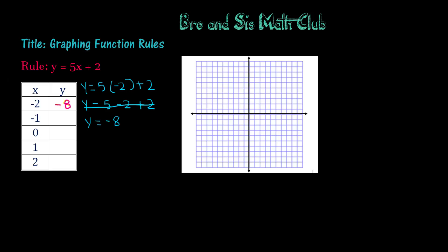Now let's go ahead and do the second one. So we have y equals 5 times negative 1 plus 2. Remember, we have to multiply 5 times negative 1, which is negative 5, and then plus 2. Negative 5 plus 2 is negative 3.